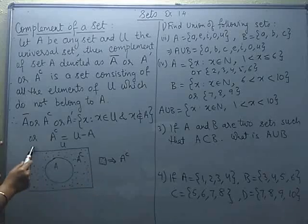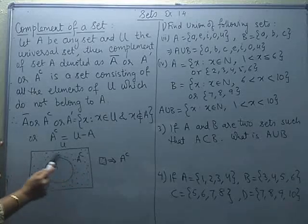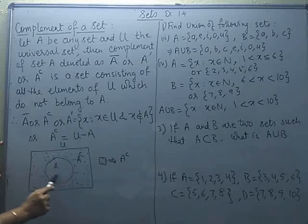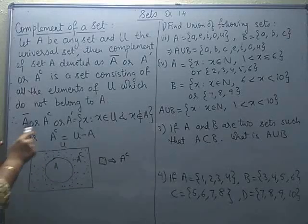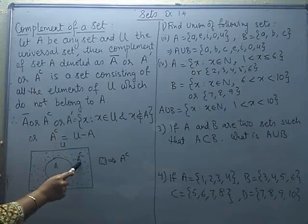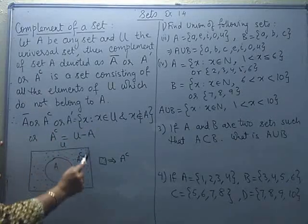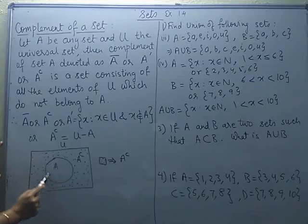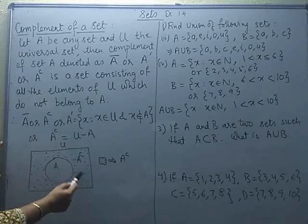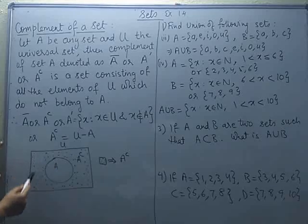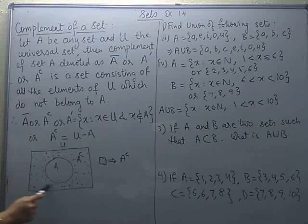This box is the universal set and A is a subset of that, so A is inside the universal set. Now if you define complement of A, then according to the definition, complement of A will contain those elements of the universal set which are not coming inside set A. You can easily see this dotted portion which is outside A — that is the portion where the elements are part of U but they are not part of A. So this portion is the complement of A.